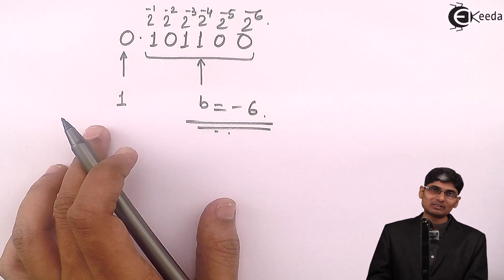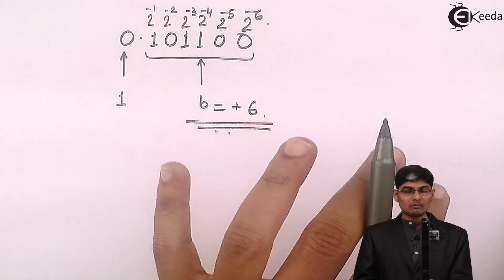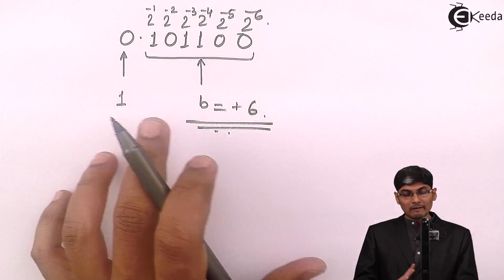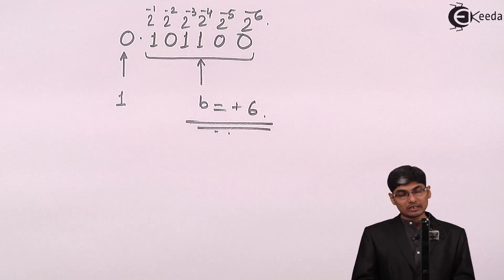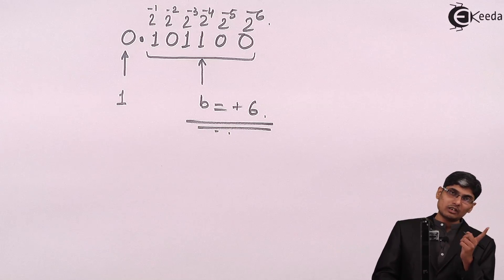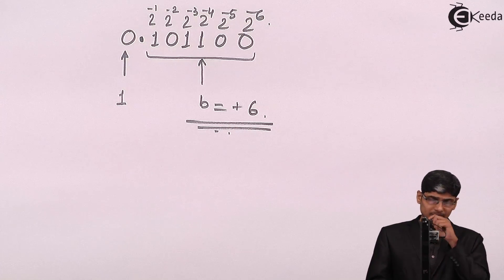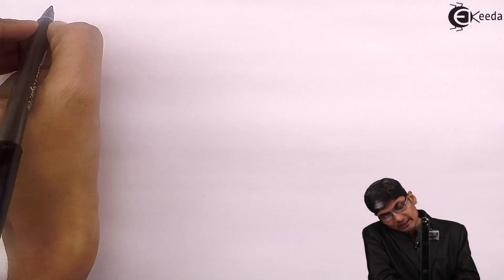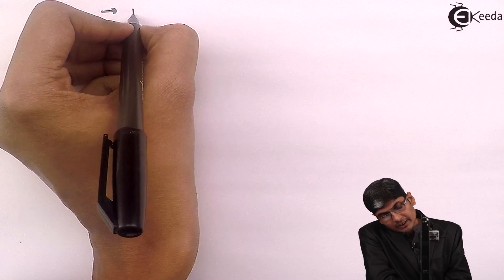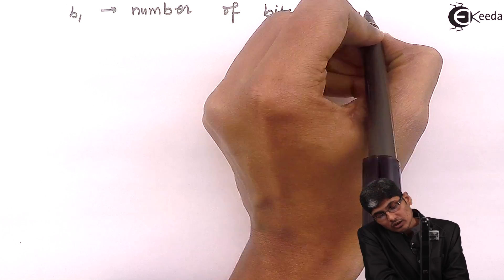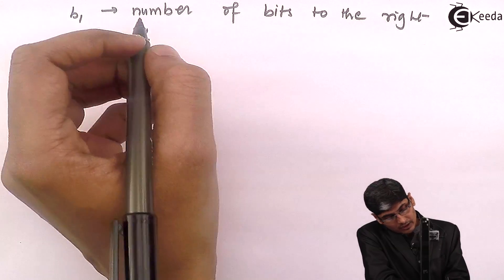So if b is 6, we have a 7-bit representation (6+1). We always use the magnitude of the exponent, so b is +6. There will always be one bit to the left of the binary point (the MSB) and b bits to the right — that is what we mean by b+1 bit representation.